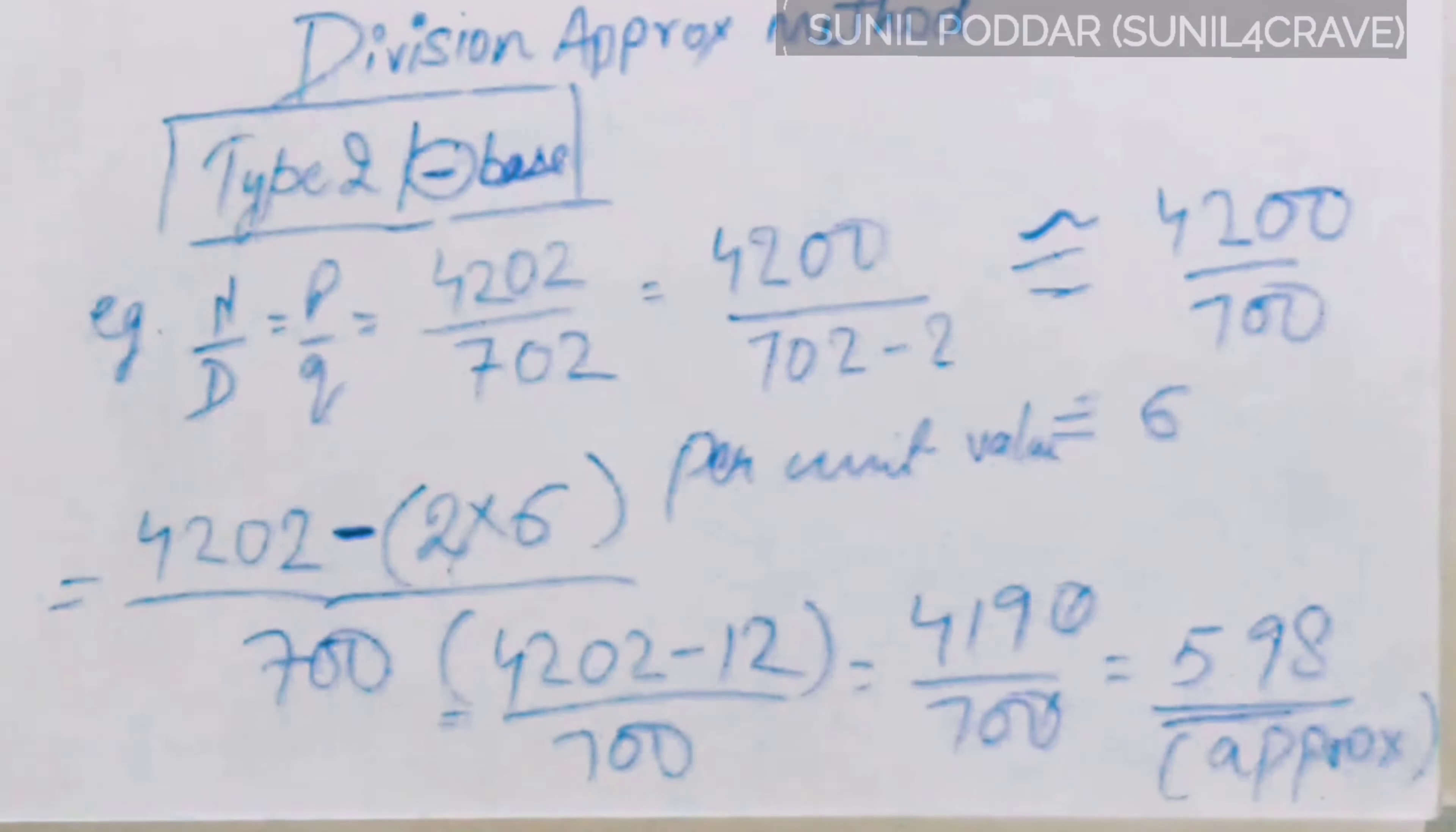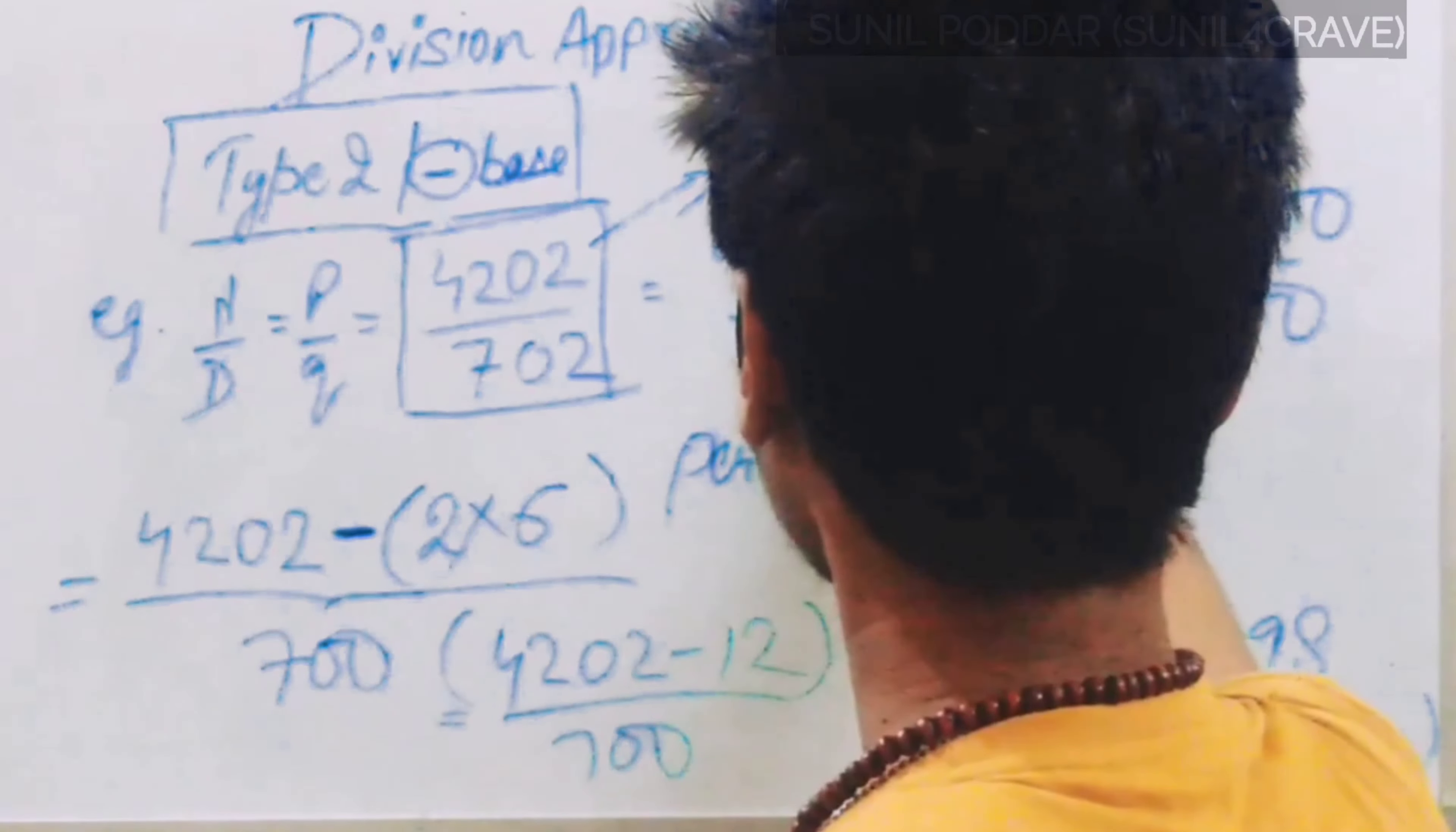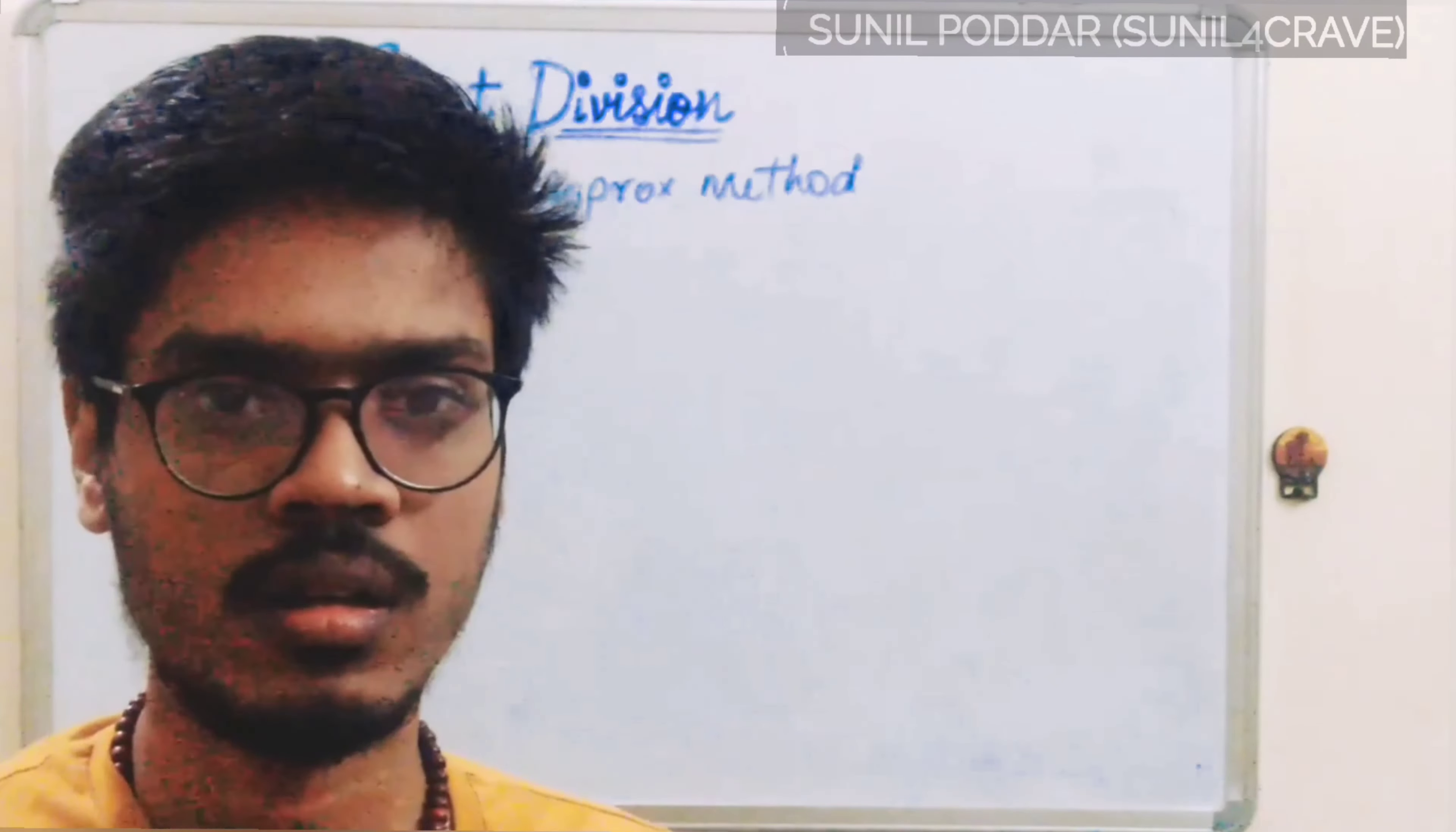So our answer 5.98, this is our approximate figure. Let's check the exact answer. When we divide 4202 with 702, the actual figure is 5.98. The exact answer we have there. Note it down for your future use. The plus base is our Type 1, the negative base is our Type 2.